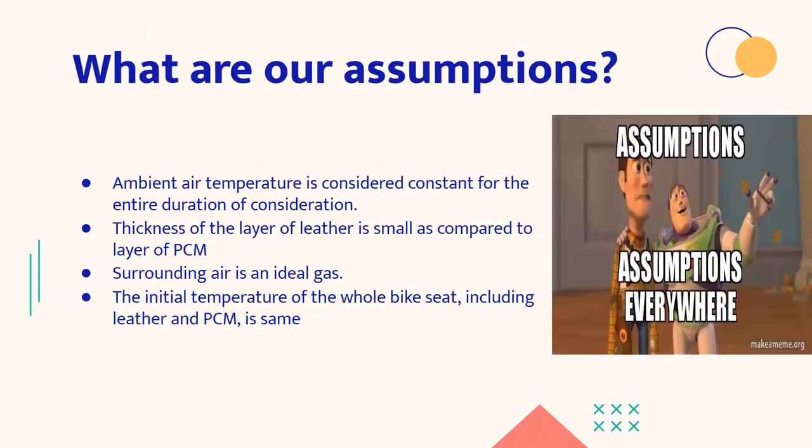So here is our set of assumptions and we'll also cover why we have opted for these assumptions. Firstly, we have considered that ambient air temperature is constant for the entire duration of consideration. We have taken this assumption because we are not accounting the spatial variation of temperature with respect to time. Secondly, the thickness of the layer of leather is small as compared to the layer of PCM, so that our control volume analysis could be done in a better manner. Surrounding air is an ideal gas so that the calculations could be done more accurately.